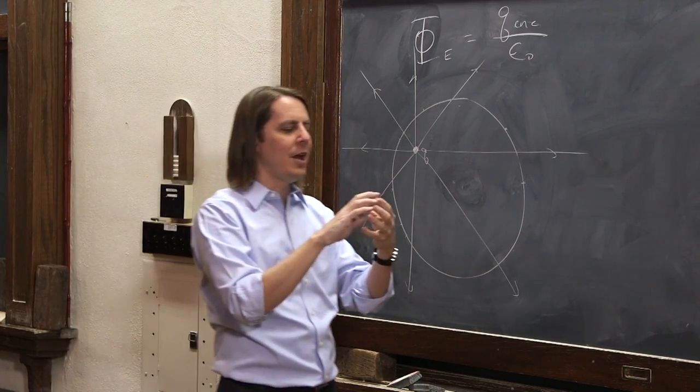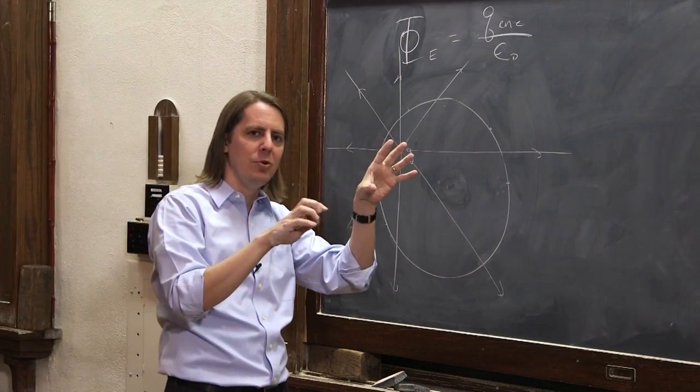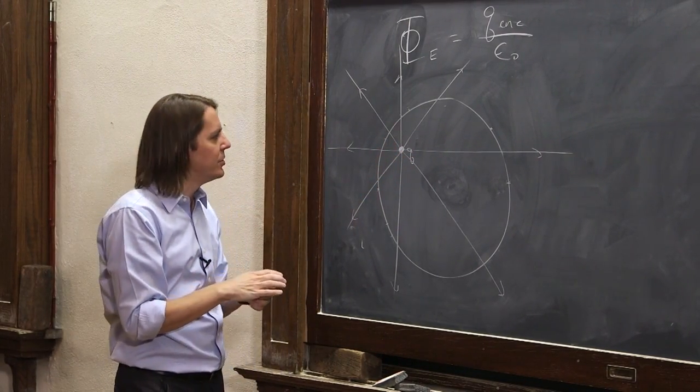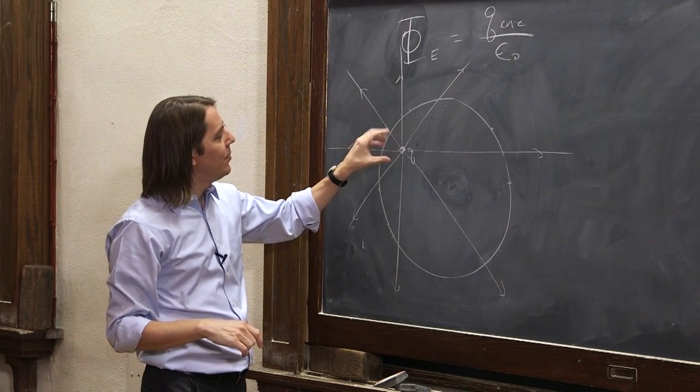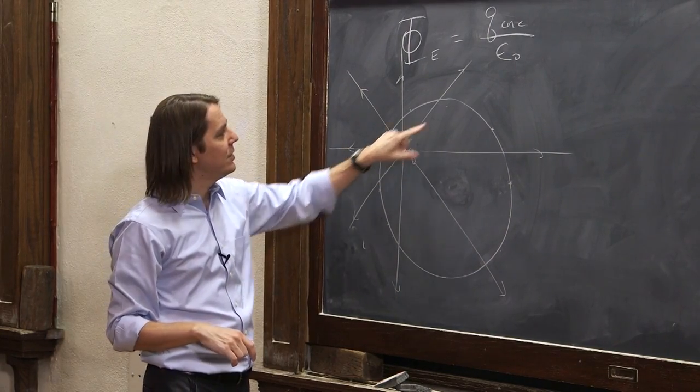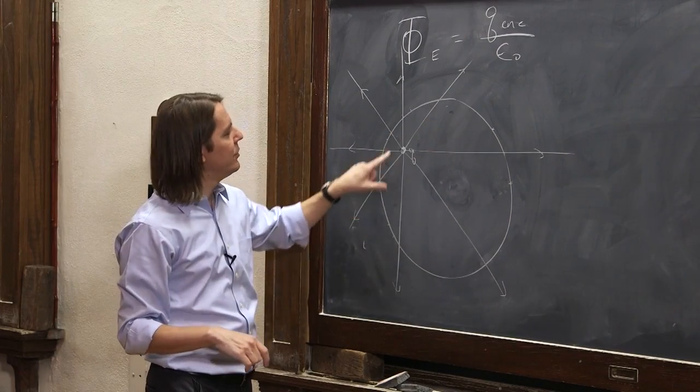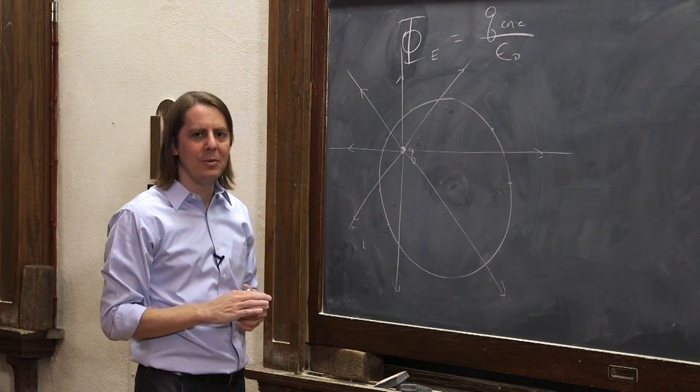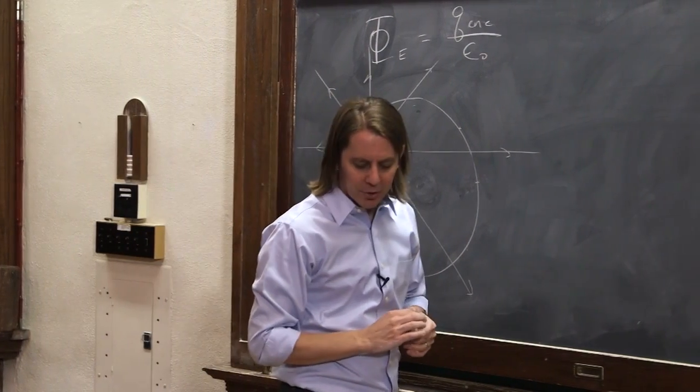So the other thing the number of field lines is proportional to is the charge. Remember, when we were drawing these diagrams, we said, how many field lines do you use if you have 2Q and Q? Well, you put twice as many on 2Q as you do on Q. So the number of field lines is proportional to the charge. So you can now see that if eight field lines means a charge of Q, then all eight go out of the sphere. And it's actually anywhere you put it, all eight go out of the sphere. So this way, you can kind of see, as I move this charge around, the flux is always going to be the same. It's always going to be eight field lines coming out. So that might be a more convincing way to look at it.